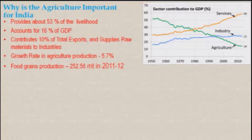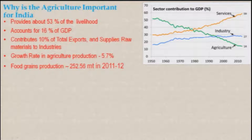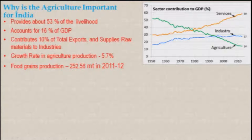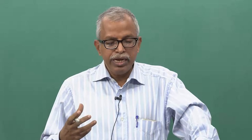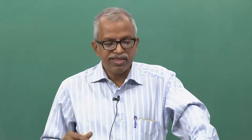The service sector has been increasing at a rapid rate, but it can fail at any time because we are depending on foreign countries — we have become a service provider mainly to western countries in software. If that falls, where will we go? Agriculture GDP is going down, but we need to take care of our own food security. We do export about 10 percent of food stuff to other countries.